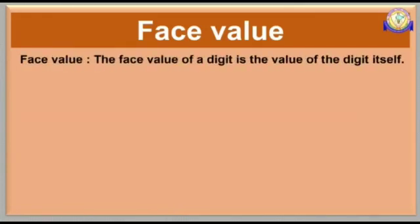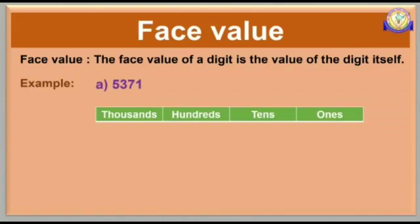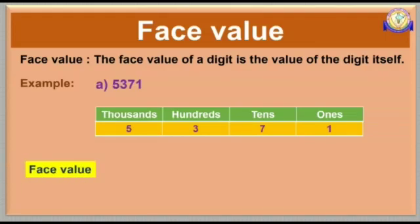First, we will learn about face value. What is face value? The face value of a digit is the value of the digit itself. I have taken a 4-digit number 5371. I am going to place this number 5371 in the place value chart. The face value of every digit is always the digit itself. Therefore, the face value of digit 1 is 1, the face value of digit 7 is 7, the face value of digit 3 is 3, and the face value of digit 5 is 5.